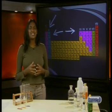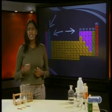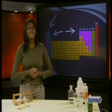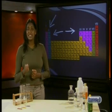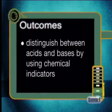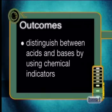When we examined chemical reactions in an earlier series of lessons, we found out that metal oxides are basic and non-metal oxides are acidic. But what do these terms really mean? In today's lesson, we will investigate how to distinguish between acids and bases by using chemical indicators. By the end of this lesson, you should be able to distinguish between acids and bases by using chemical indicators.